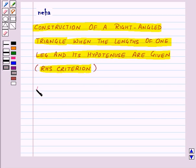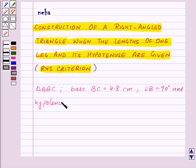Let us construct a triangle ABC in which base BC is equal to 4.8 cm, angle B is equal to 90 degrees, and hypotenuse AC is equal to 6.2 cm.